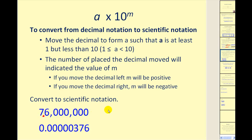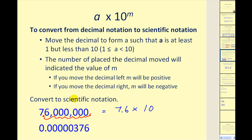For the first example, the decimal belongs here, so in scientific notation this will be 7.6 times some power of 10. Counting from where the decimal started to where we want it gives us one, two, three, four, five, six, seven places. It would be a positive 7, since this is a rather large number — it makes sense this exponent would have to be positive.